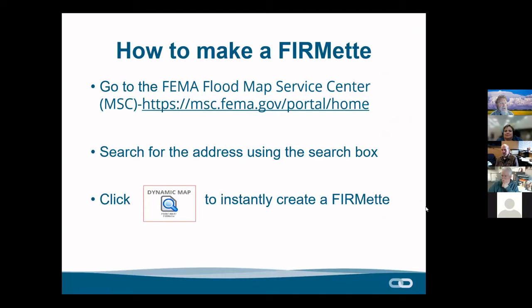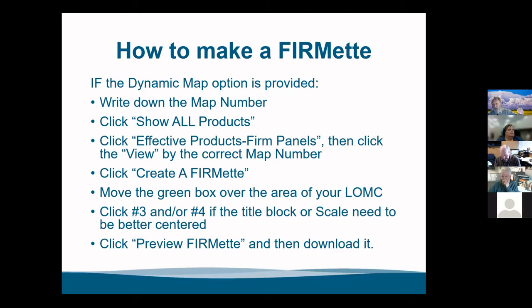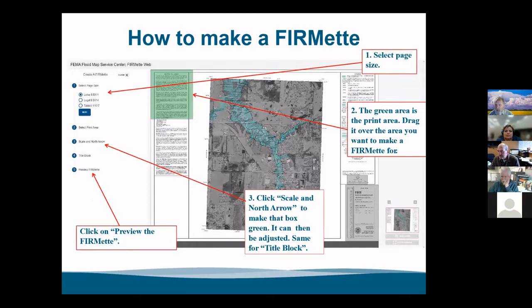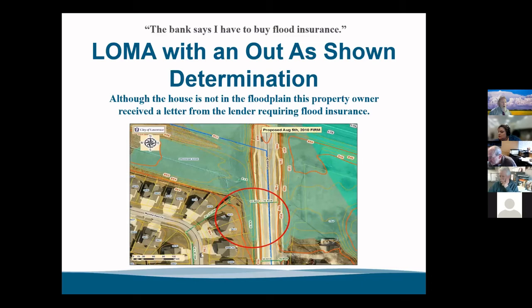Back to the slides. How to make a FIRMette: if you've got digital maps, click the dynamic box and it'll make the FIRMette for you. If a dynamic map option is not provided, there are instructions for how to make a FIRMette with old paper maps. Now, many of you have called me about a situation like this: a guy's house is here, and all of a sudden the bank calls him and says, 'Hey, you have to buy flood insurance because we determined your property is in the floodplain.' Well, he's got a little bit of property in the floodplain in the back, but his house isn't. So what can he do?